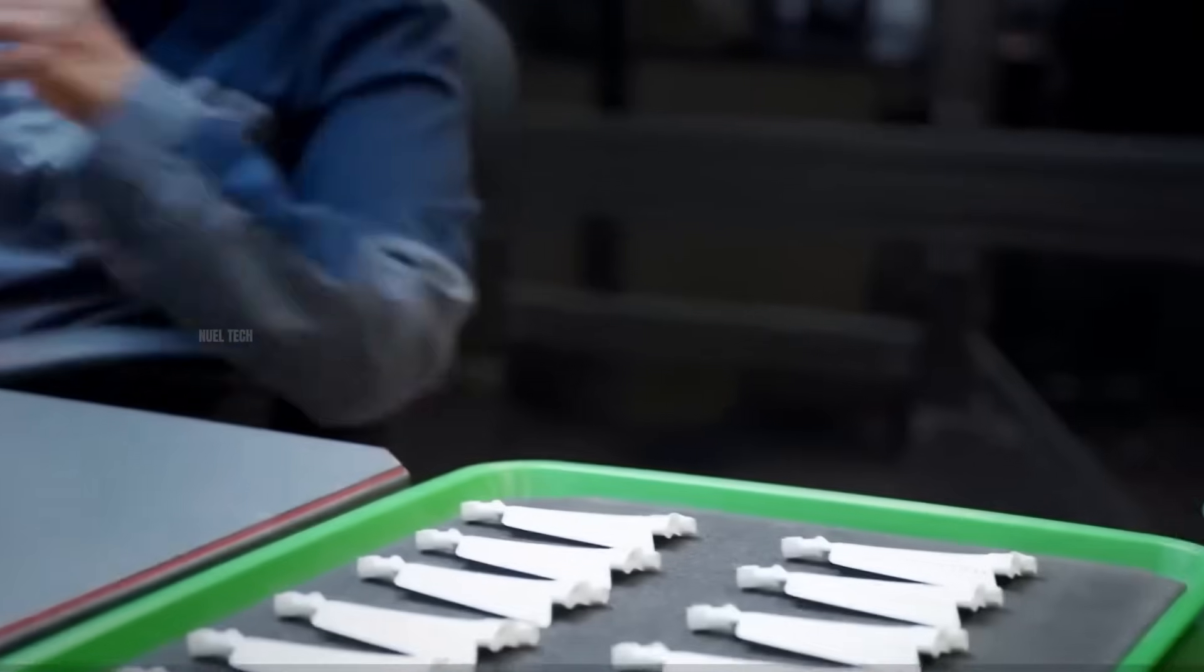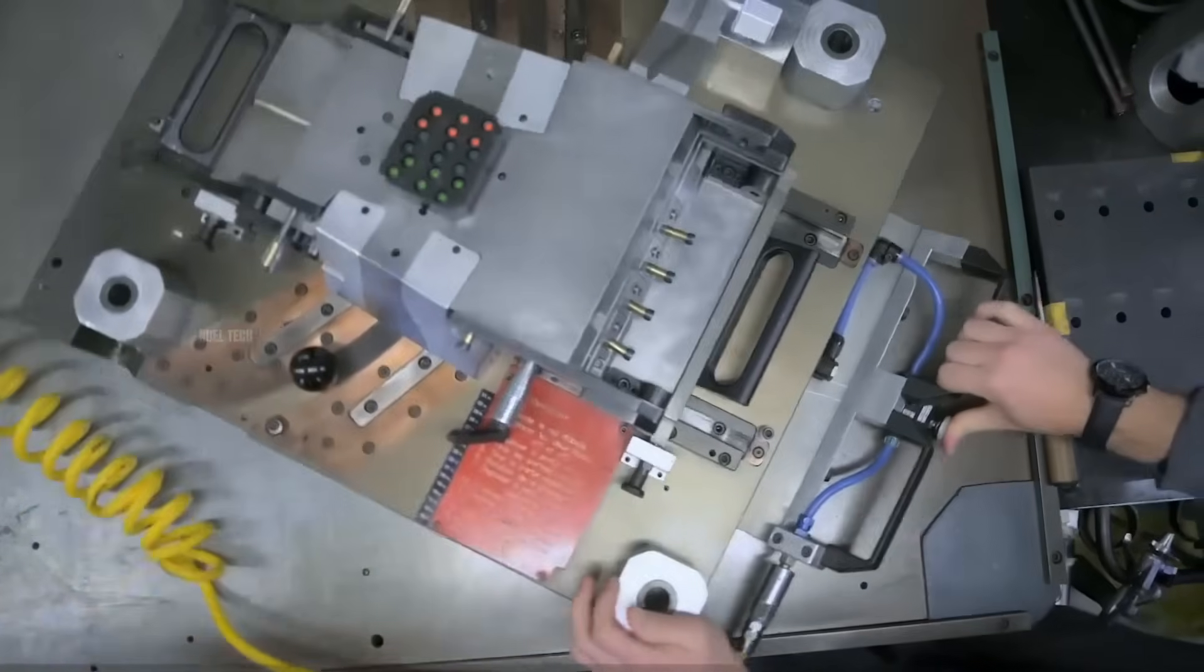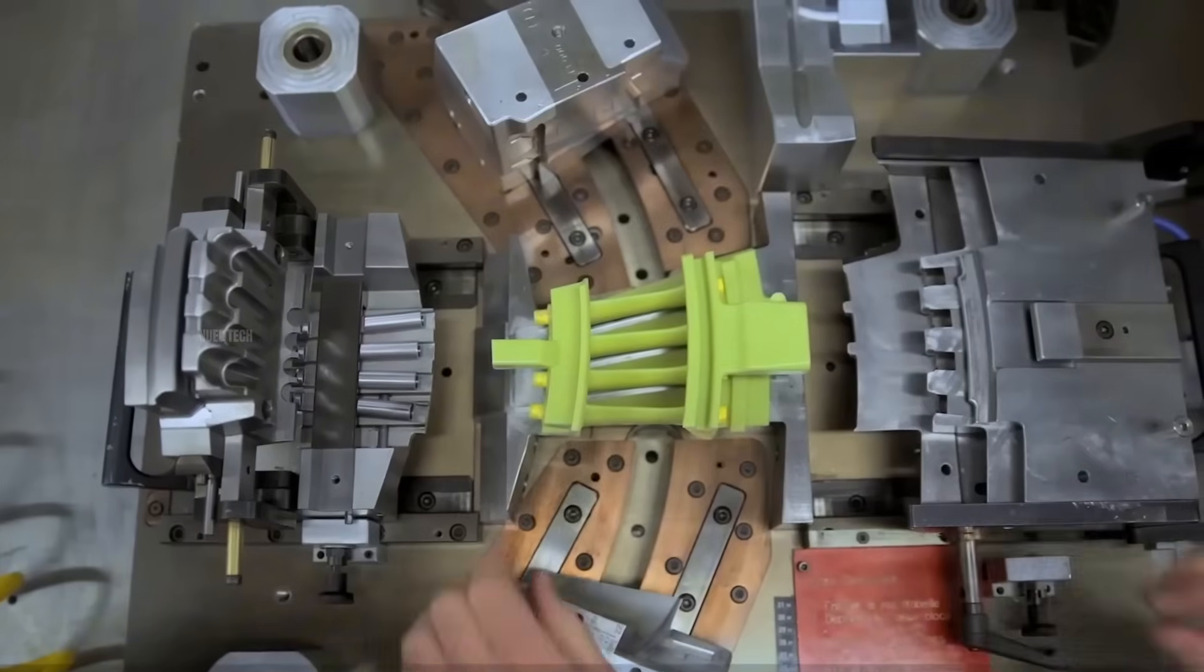Next, molten wax is injected into the mold containing the ceramic core, forming the full wax model of the blade with the core embedded inside.